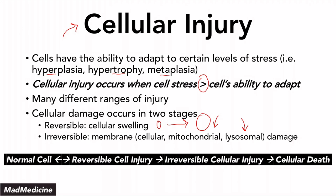Essentially, you're going to have a normal cell. And when you have too much stress placed upon it, it's going to go to the reversible cell stage. And then if it continuously has stress upon it, you're going to eventually hit the irreversible stage, which is going to, no matter what, lead to cellular death. You cannot avoid cell death — it is imminent. The reversible cellular injury phase is reversible, hence the name, and you can see with this double arrow you can go back to a normal cell stage.